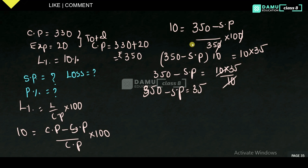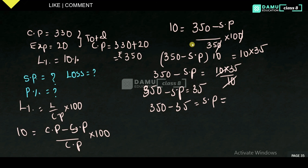From 350 minus SP equals 35, we get SP equals 350 minus 35. So selling price equals 315 rupees.